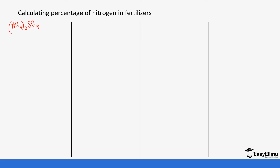For ammonium sulfate — (NH₄)₂SO₄ — the atomic masses are: nitrogen = 14, hydrogen = 1, sulfur = 32, oxygen = 16. Opening the bracket, there are two nitrogen atoms, so the nitrogen mass = 14 × 2 = 28.